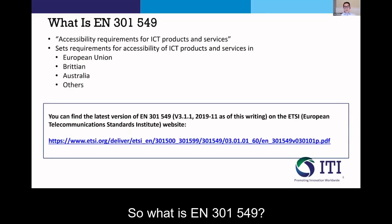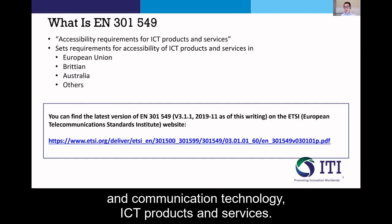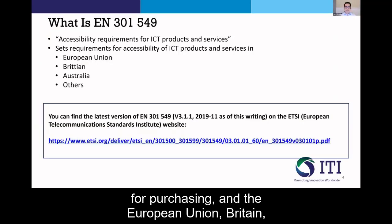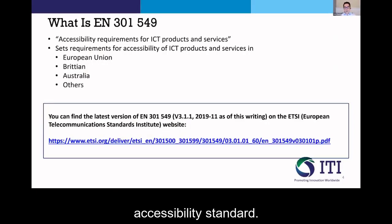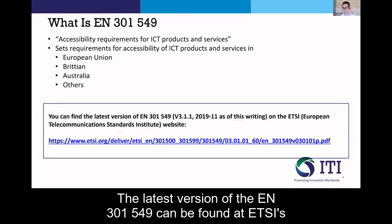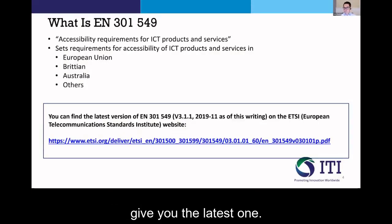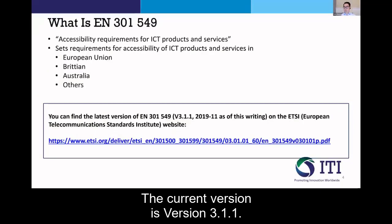So what is EN 301 549? It is an accessibility requirement for information and communication technology — ICT products and services. These are a set of different requirements applied for purchasing in the European Union. Britain, Australia, and other countries have also adopted the EN 301 549 accessibility standard. The latest version can be found at ETSI's website, etsi.org, where you can search for the standards. They do update the standards from time to time. The current version is version 3.1.1.